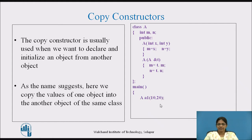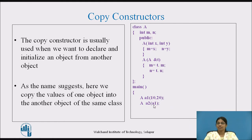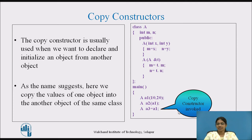First, we create object a1 by passing two parameters 10 and 20, which invokes the parameterized constructor and initializes m and n to 10 and 20 for a1. Then object a2 is created by passing object a1 — here the copy constructor gets invoked. a1 is copied to object t, and using t.m and t.n we access the data members of a1, which are assigned to m and n of a2. Similarly, object a3 is created and a1 is assigned to a3, also invoking the copy constructor — a1 is copied to t, and t.m and t.n are assigned to m and n of a3.